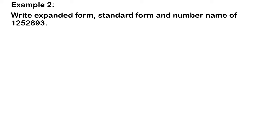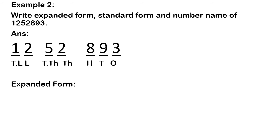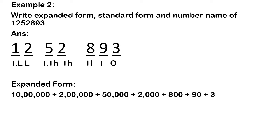Example 2: write the expanded form, standard form, and number name of the given number. The first step is to write the place value: 1, 10, 100, 1,000, 10,000, lakhs, and 10 lakhs. The expanded form: 1 into 10 lakhs = 10 lakhs; plus 2 into lakhs = 2 lakhs; plus 5 into 10,000 = 50,000; plus 2 into 1,000 = 2,000; plus 8 into 100 = 800; plus 9 into 10 = 90; plus 3 into 1 = 3.